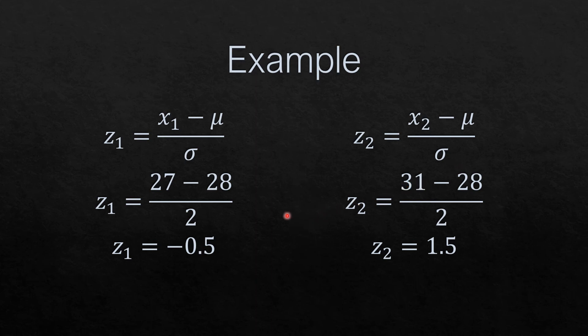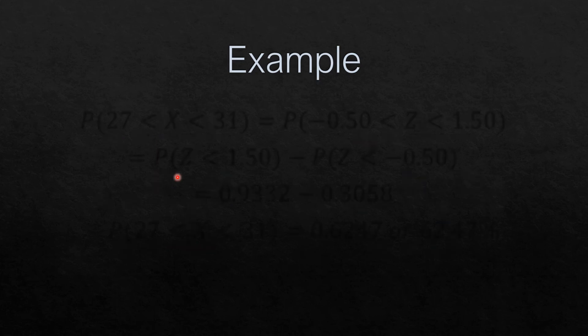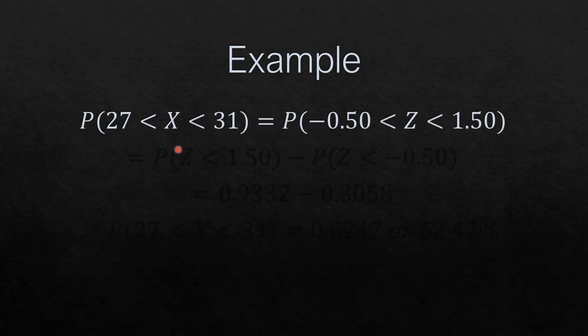Since we are asked for the probability that X is greater than 27 but less than 31, we transform it into its corresponding Z-score. We have the probability that Z is greater than negative 0.5 but less than 1.5.